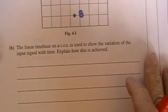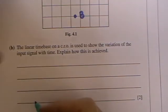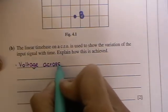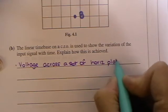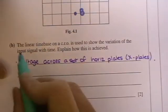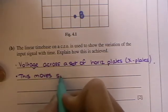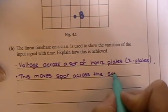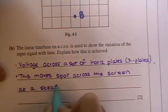The linear time base on a CRO is used to show the variation of the input signal with time. Explain how this is achieved. This moves the spot across the screen at a steady speed.